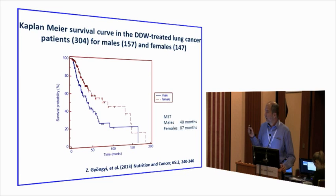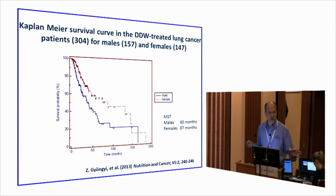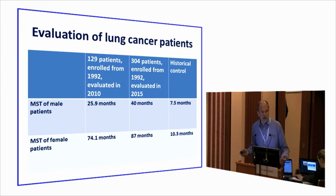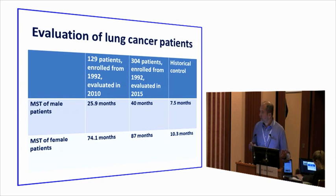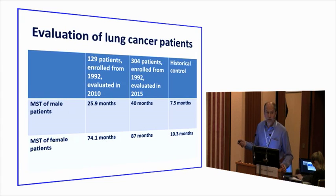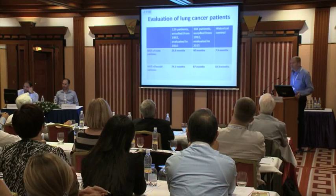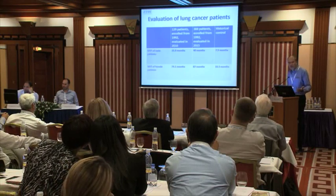Earlier we published a paper finding correlation between genes having key roles in lung cancer development, and a mice study showed how DDW can modify gene expression of those genes differently in males and females. Comparing with results from five years ago: at 2010 with 129 lung cancer patients, male median survival was 25.9 months and female was 74.1 months. Today, those figures improved to 40 months for males and 87 months for females. I hope we can continue to increase that median survival time.